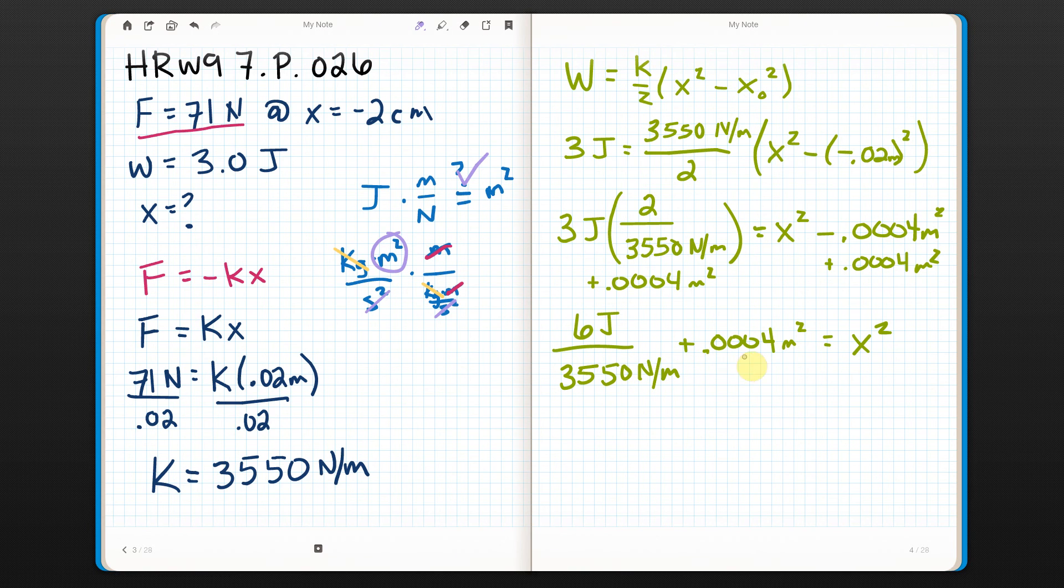So I plug all these into my calculator, and then I take the square root, and I get that x is plus or minus. Remember, when you take a square root, you have to do plus or minus. I forgot the equal sign. And I get 0.0457 meters.